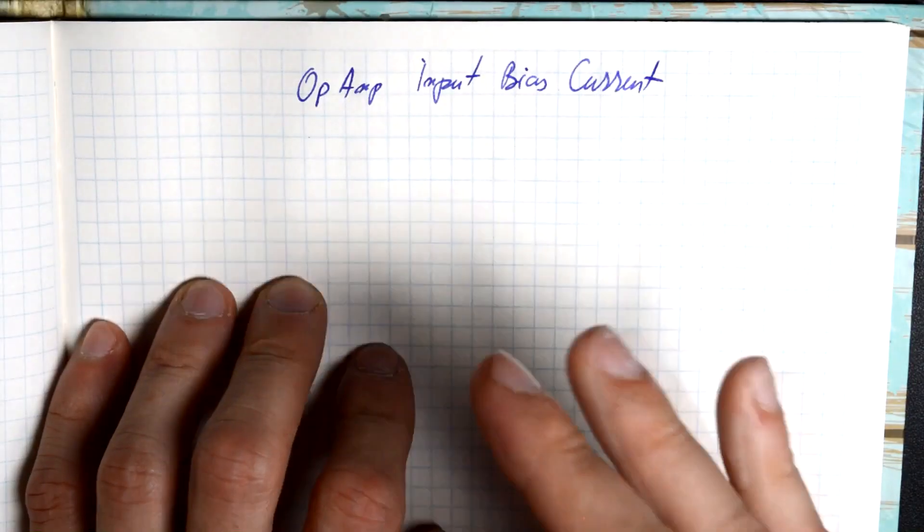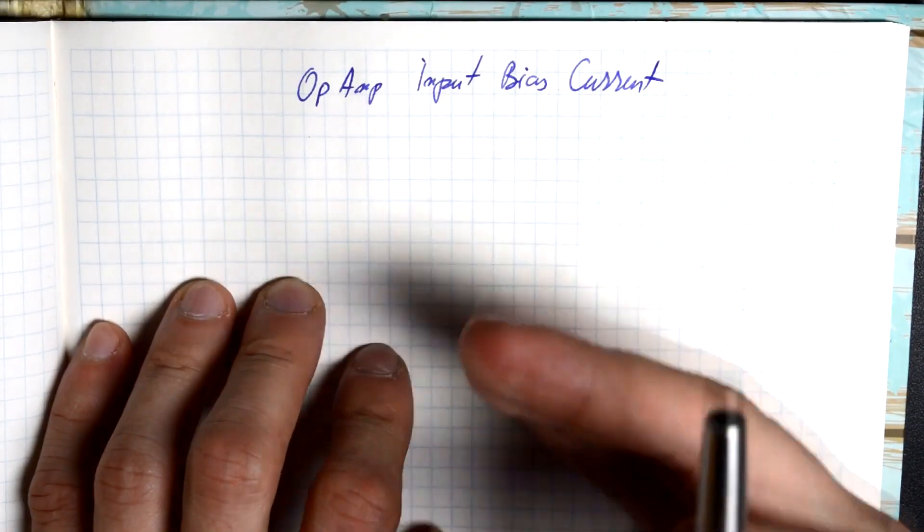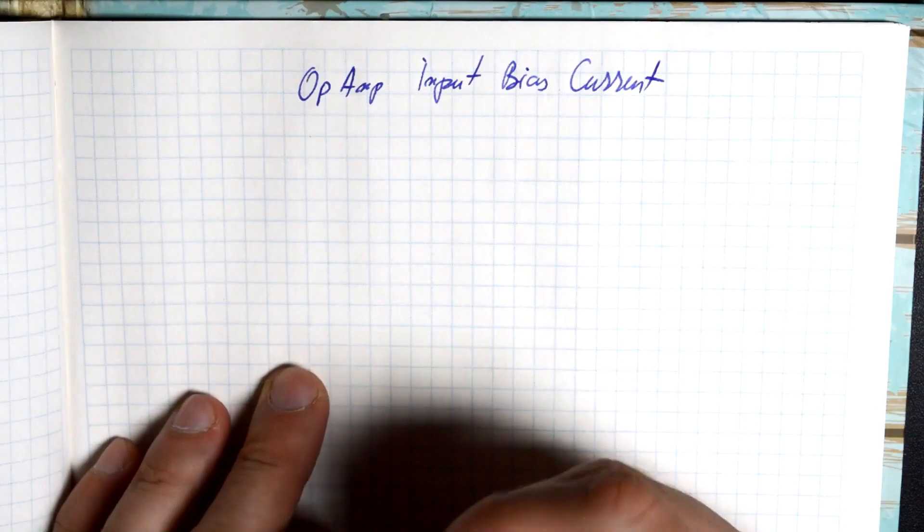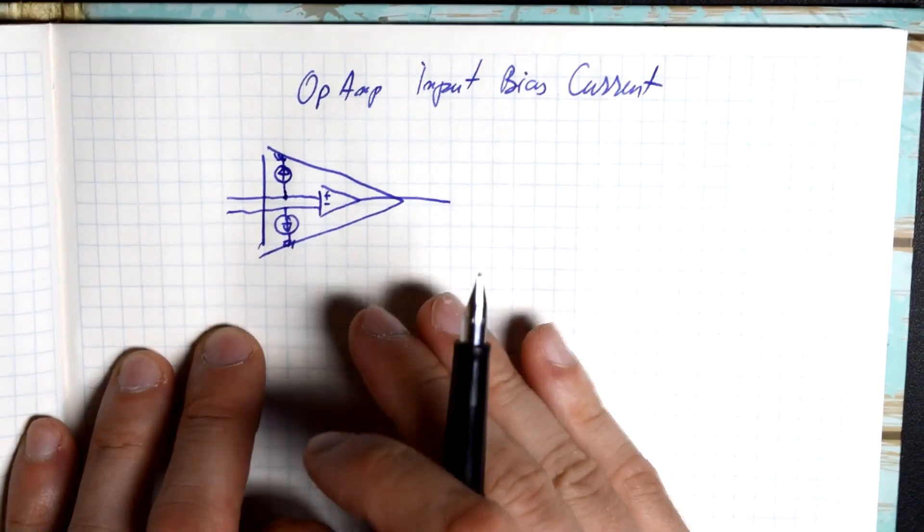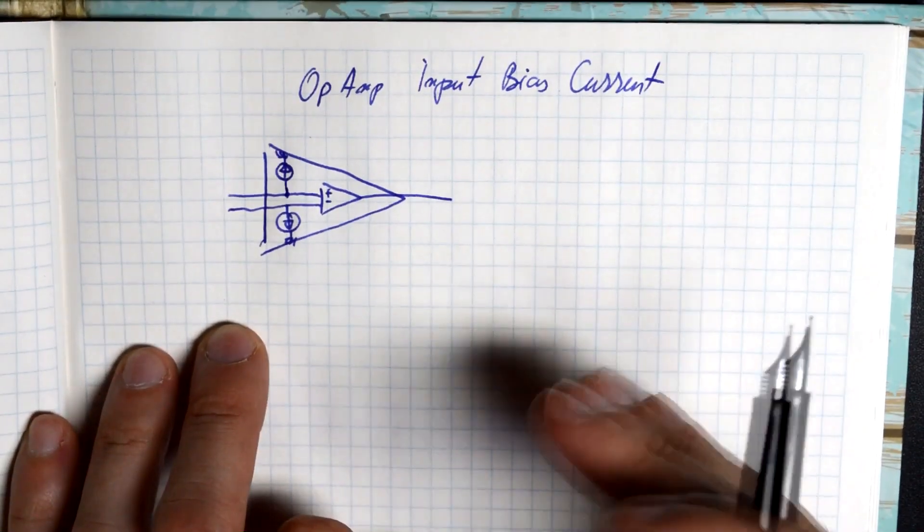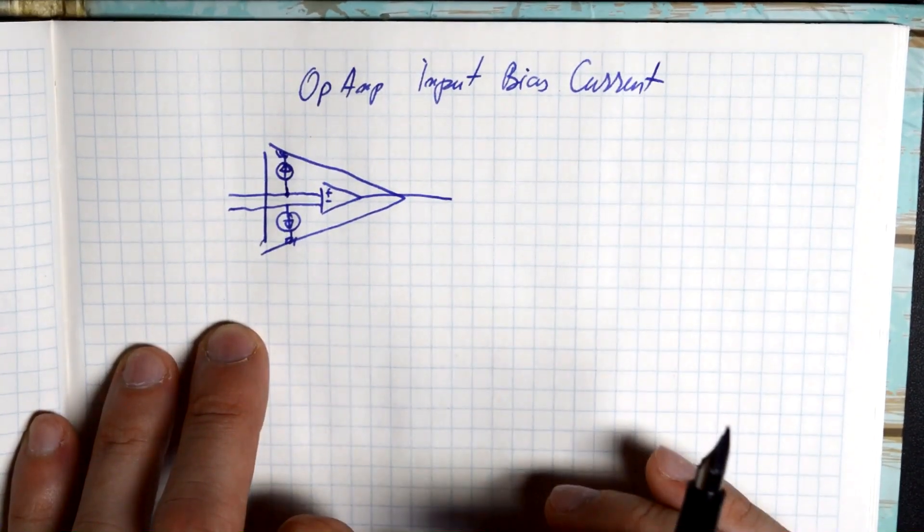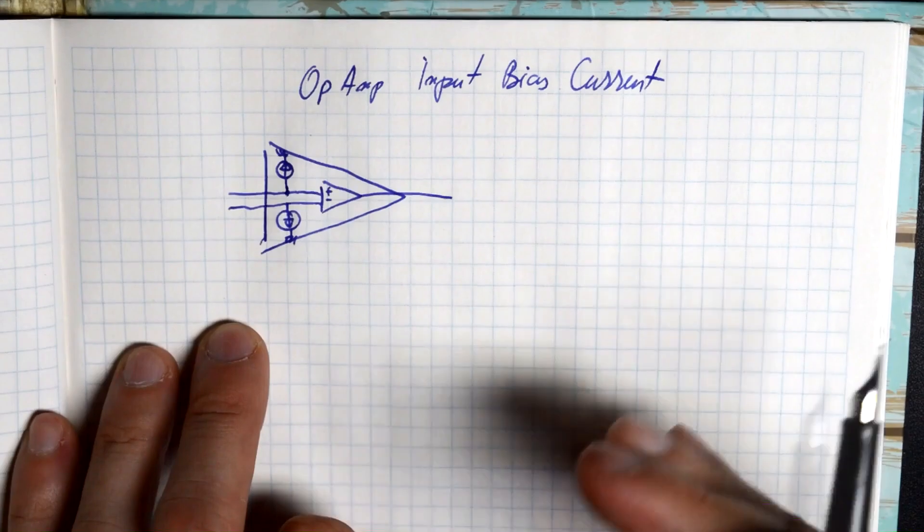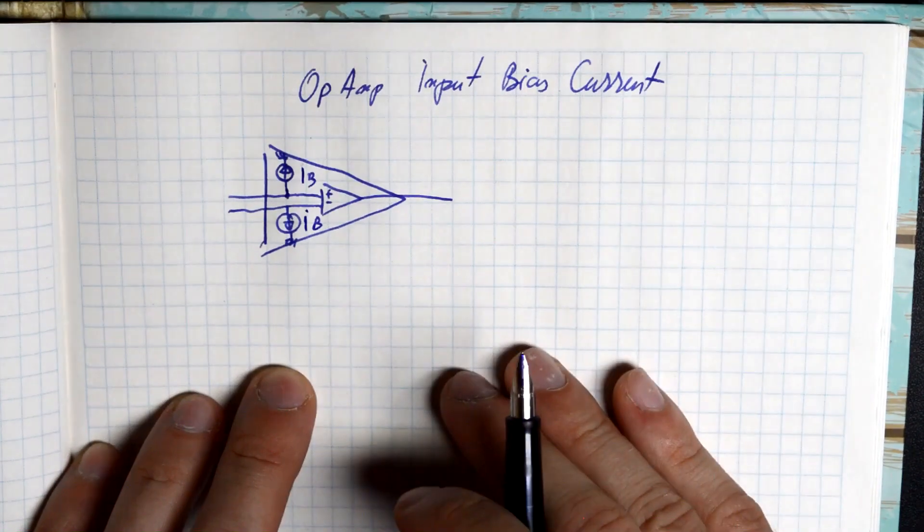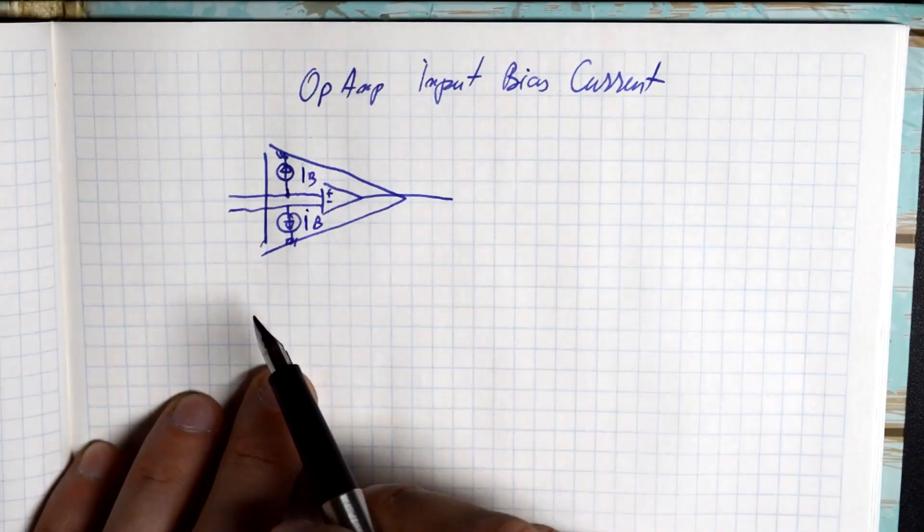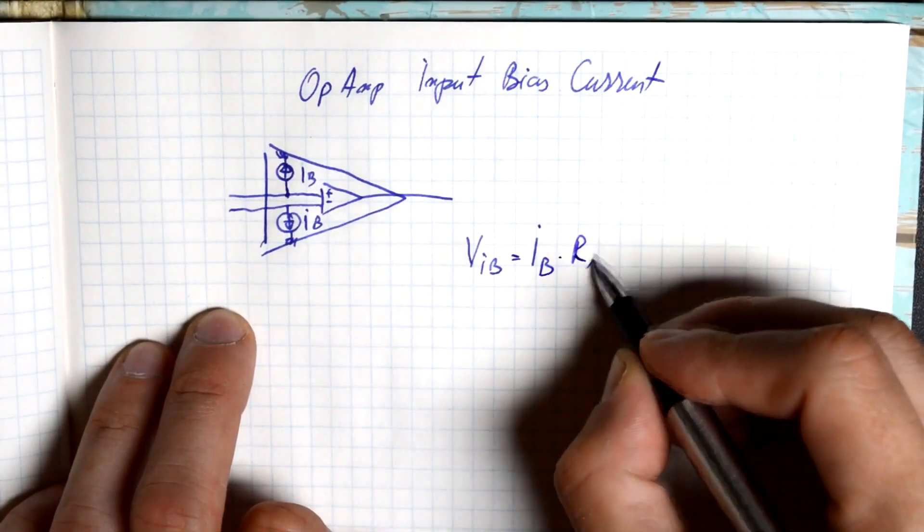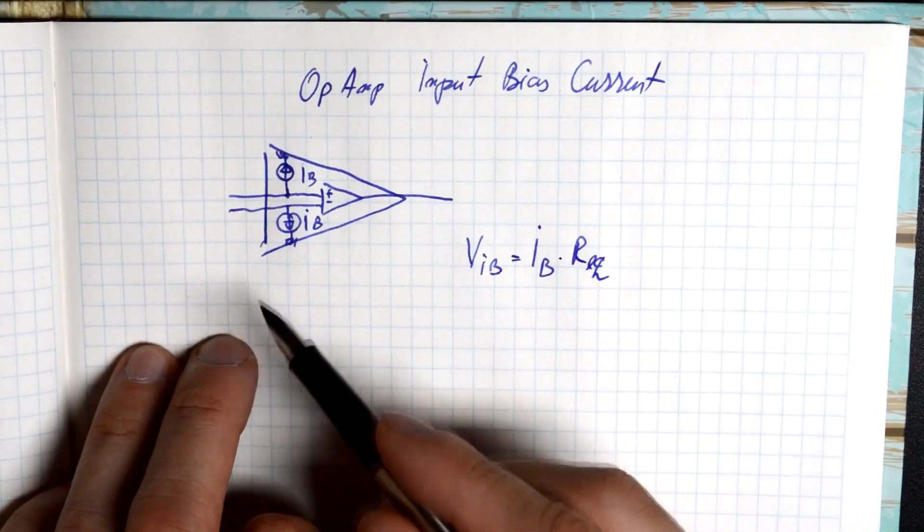Now the next term I want to talk about today is the input bias current. Simply put, this is the current drawn by the op-amp when it's performing a measurement. We can model this like a constant current load on the op-amp's input. Now this current can either be positive or negative, but this current is usually quite small. So in most cases, it is of little influence on your circuit. That is of course, unless you're using a high impedance signal source or a high impedance signal path. And that is because this input bias current will insert an extra offset voltage based on your input resistance and the current.